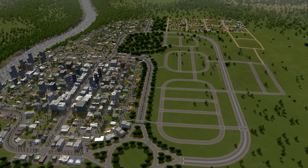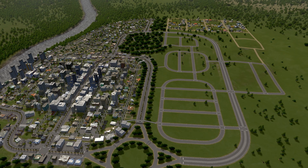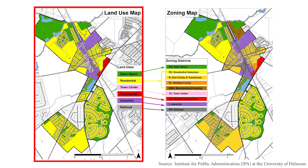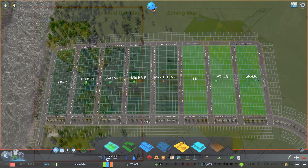Before we get into that, I want to explain the difference between land use and zoning. Land use is the generalized planning categories for what sort of development is planned for a given area. General categories could include things such as residential, commercial, office, industrial, institutional, protected green space or parks, etc.